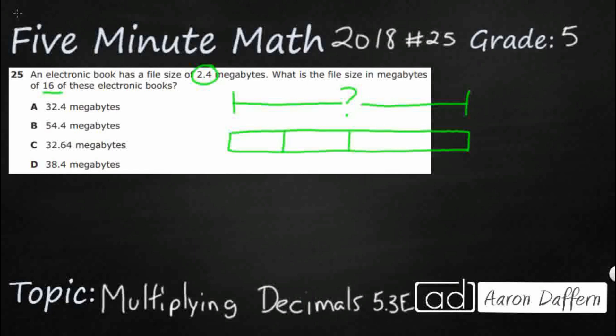Cut each half in half, that's going to give me fourths. Cut each fourth in half, that's going to give me eighths. Then if I cut each eighth in half, I'm going to get sixteenths. So I've got 16 little boxes here. Every single one of these is going to be 2.4.